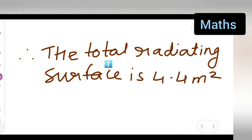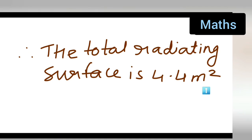Therefore the total radiating surface is 4.4 meter square. I hope you have understood exercise 13.2 question number 8. Thanks for watching. If you have any doubts or queries you can comment below.